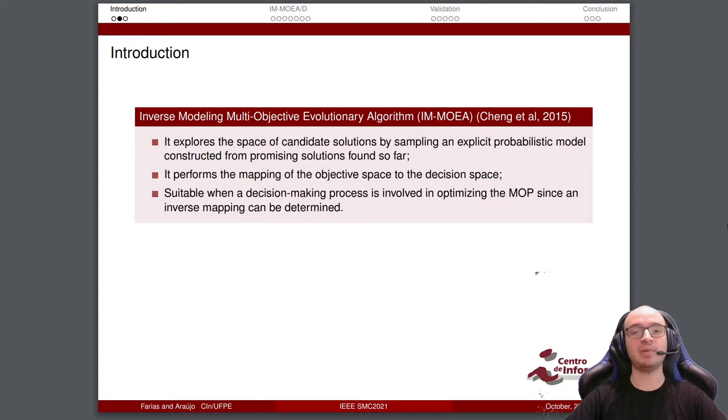In this approach, an explicit probabilistic model is constructed from promising solutions. Why is it explicit? Because it uses the behavior of the problem to solve the problem, and this is different from the before methods. In this approach, we have a mapping of the objective space into the decision space. Before methods take the decision space to estimate the objective space, but here we make the inverse process.